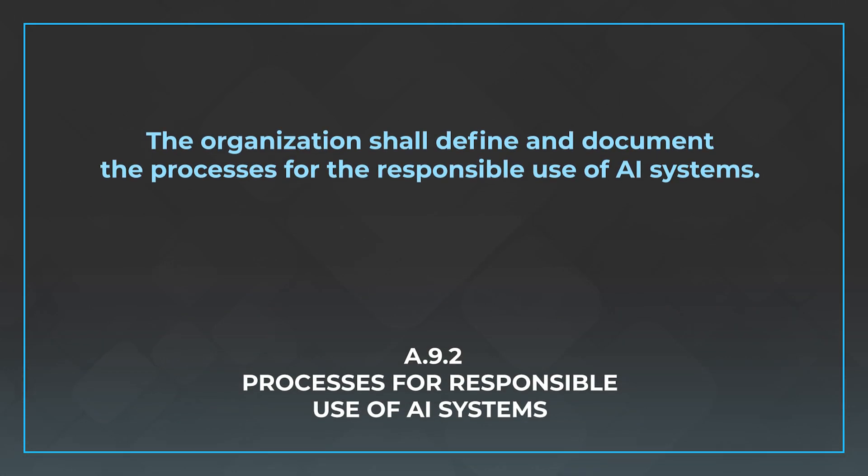The first control is A.9.2, processes for responsible use of AI systems. This is a very broad control. Who determines what responsible use of your AI systems are? It should be top management. There's going to be a lot of subjective discussion around this control. It depends on what you've built, what you're using AI for, how it may impact your data subjects, but ultimately someone needs to be accountable for what responsible use looks like. The control says the organization shall define and document the processes for the responsible use of AI systems. You need to think like a bad guy and think about how your system can be misused, abused, and used for reasons it's not built for, and articulate those so that people avoid that behavior.